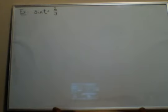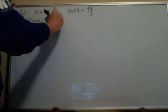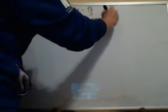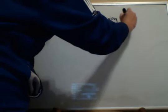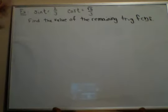So our first problem looks like this. We know that the sine of t is two thirds. And we know that the cosine of t is the square root of five over three. And our task is to find the value of the remaining trig functions. So we need to find tangent, cosecant, secant, and cotangent. Okay.